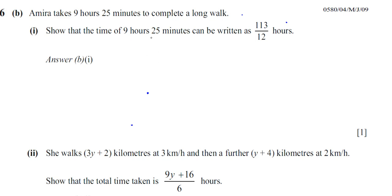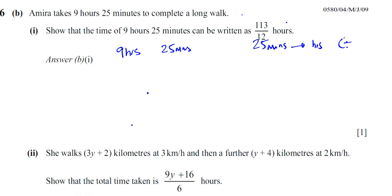Let's change this all into hours first. We have 9 hours and 25 minutes. If I want to change 25 minutes into hours, I need to divide by how many minutes in an hour — because we're going from smaller to larger, so we must divide. There are 60 minutes in one hour, so this is 25 divided by 60 hours. Now 25 over 60 simplifies to 5 over 12, so that's 5 over 12 hours.